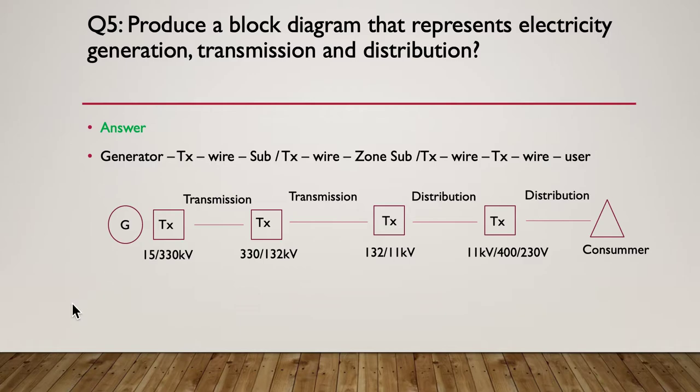So that turns into the diagram. It's just directly below here. So here's my generator. And I've got a transformer that steps the voltage up from 15 kV up to about 330 kV and that's called transmission. And then when we want to transmit shorter distances, we often drop our 330 kV down to 132 kV but it's still called transmission at that stage.